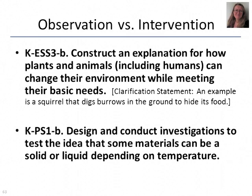Here are some kindergarten performance expectations. The first asks that students construct an explanation for how plants and animals, including humans, can change their environment while meeting their basic needs. The clarification statement gives the example of a squirrel that digs or burrows in the ground to hide its food. There, you're not going to be creating an experiment — you're going to observe, with a before and after. That's the biological sciences.